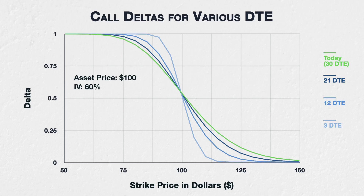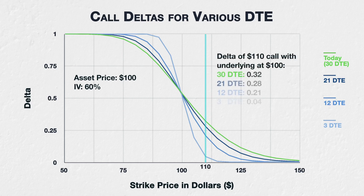Let's take a look at the $110 call option as an example — this is what the delta would be for each value of days to expiry. With 30 days it's 0.32, with 21 days it's 0.28, with 12 days it's 0.21, and with 3 days it's 0.04.